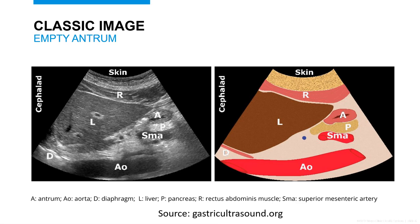We know we are at the antrum when we see the stomach, the pancreas, the SMA, and the aorta all in the same image. You may have to slide your probe parasagittally to get the alignment of these structures in the same frame. It is imperative that you prevent having an oblique cut of the antrum by keeping your probe perpendicular to the surface of the skin.